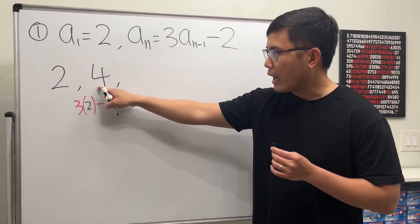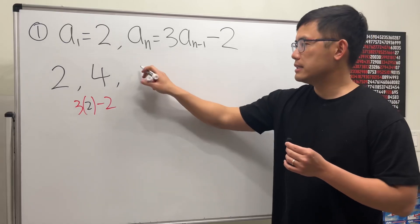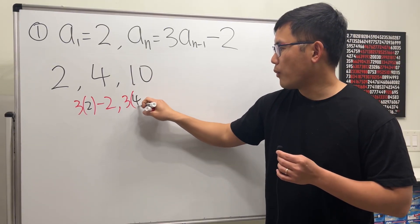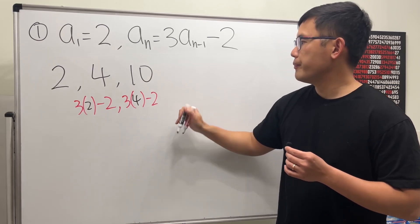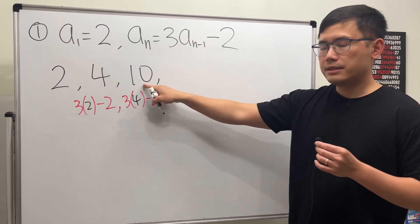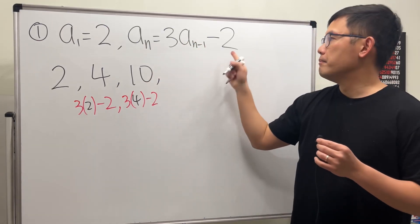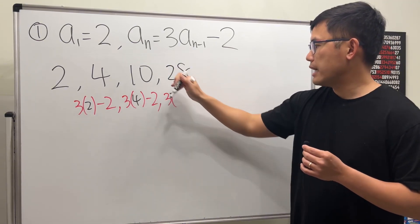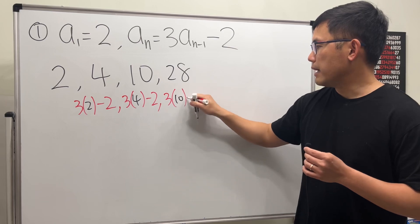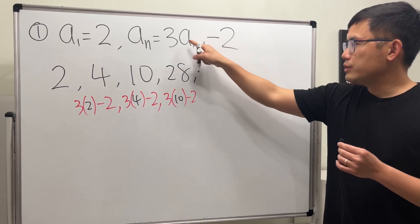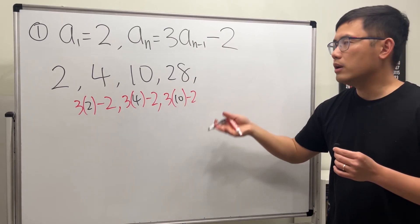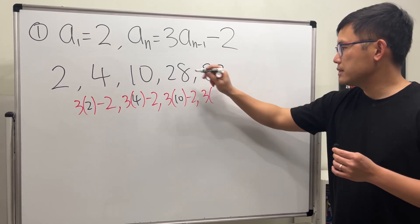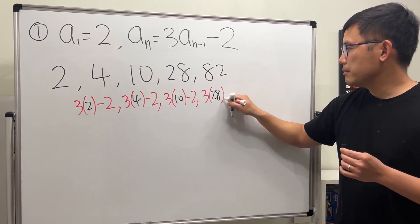Continuing: 3 times 4 is 12, minus 2 is 10, so this is 3 times 4 minus 2. Then 3 times 10 is 30, minus 2 is 28 — that's 3 times 10 minus 2. And then 3 times 28 is 84, minus 2, we get 82. So that's 3 times the previous minus 2.